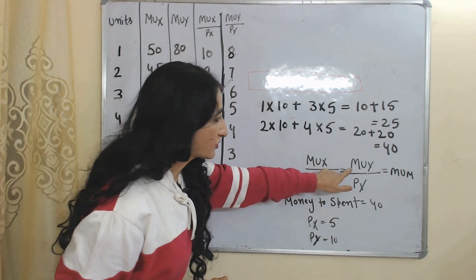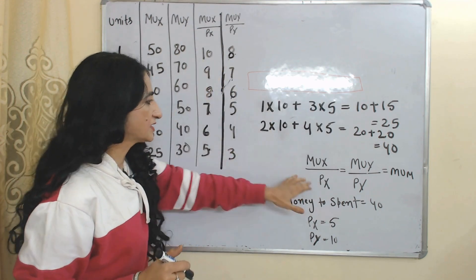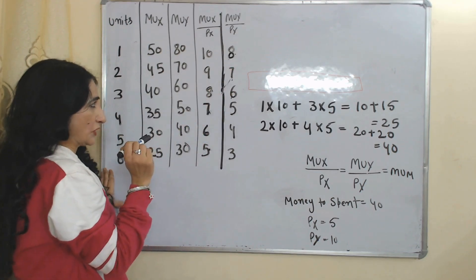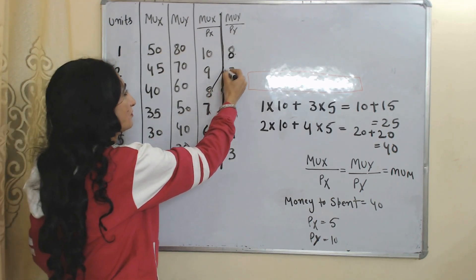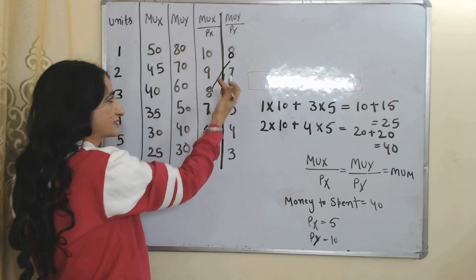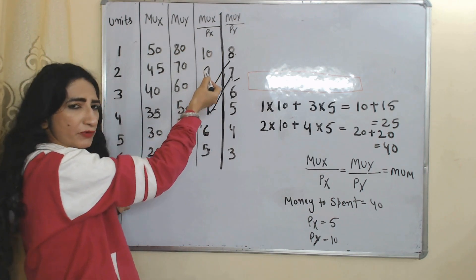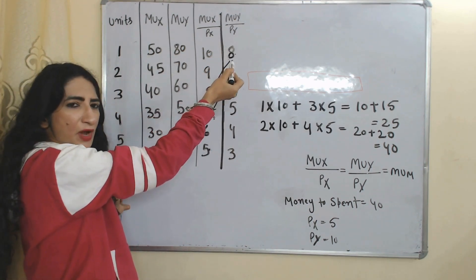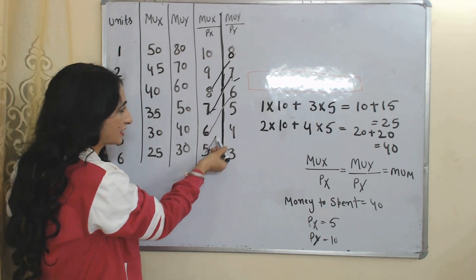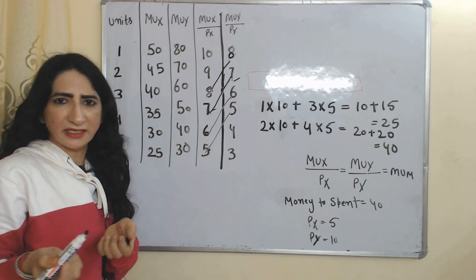According to the equilibrium condition, MUX over PX should equal MUY over PY. We look for where these two columns are equal to each other. We can see there is an 8 in MUX/PX and also an 8 in MUY/PY — at that combination both are equal. Similarly, there is a 7 and a 7, and at other combinations both are also equal to each other. We will now check each case one by one.